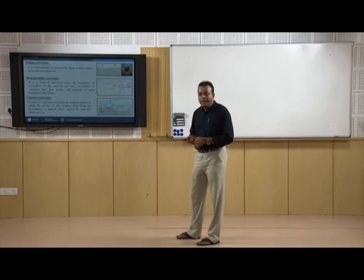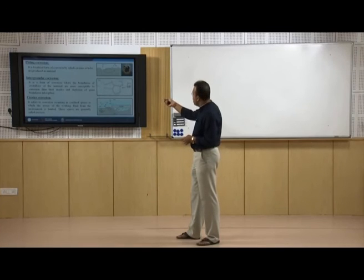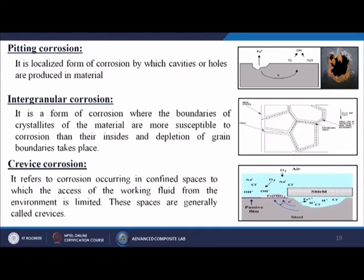Next is pitting corrosion — a localized form of corrosion by which cavities or holes are produced in metals. From the figure, we have some base metal with coatings or painting applied, but somehow holes or penetrations have been made onto that material, exposing the virgin material, and due to that some corrosion takes place — which is known as pitting corrosion.